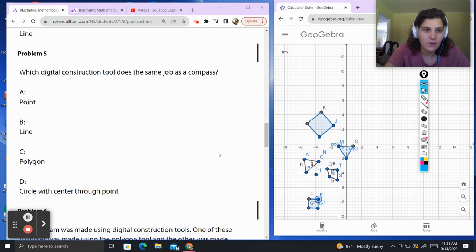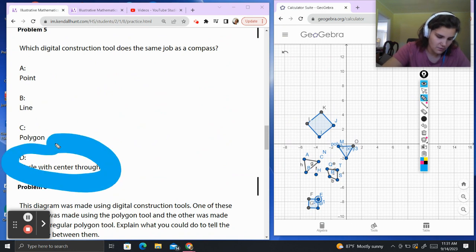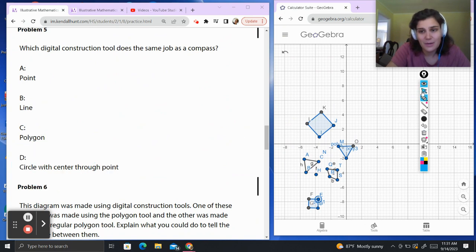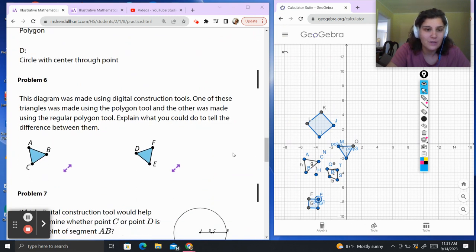Problem 5. Which digital construction tool does the same as a compass? A compass draws a circle. All right, I'm done. That was easy. If you don't know that a compass draws a circle, you should probably go back to the very beginning of this unit to start going over these questions again.